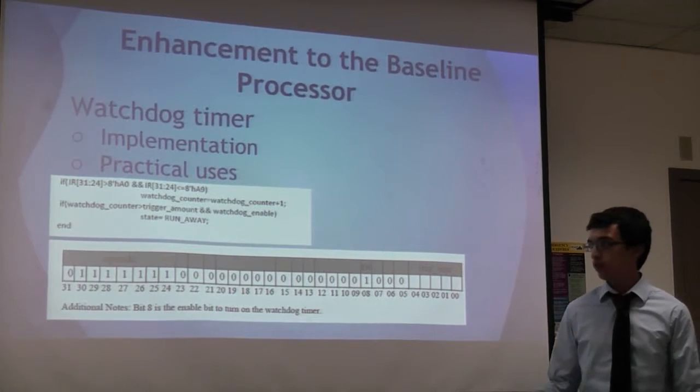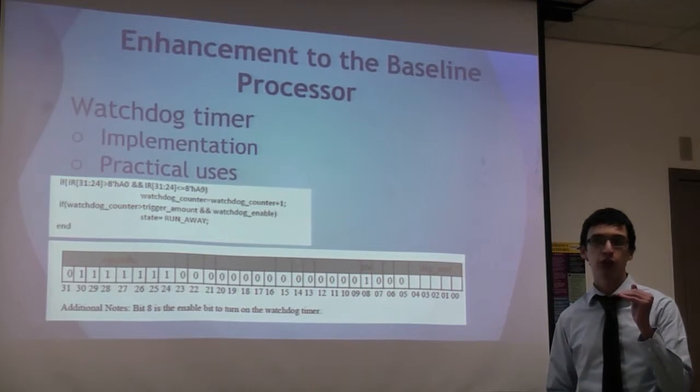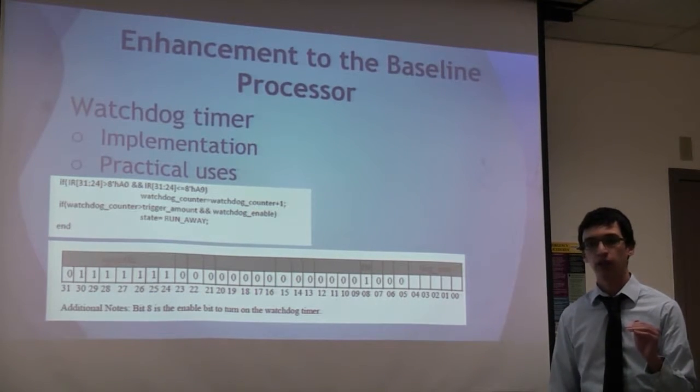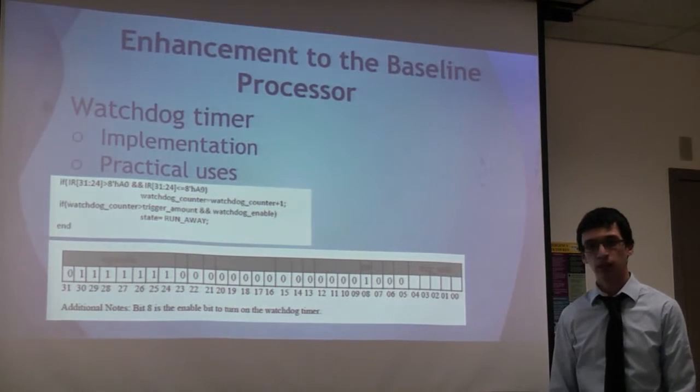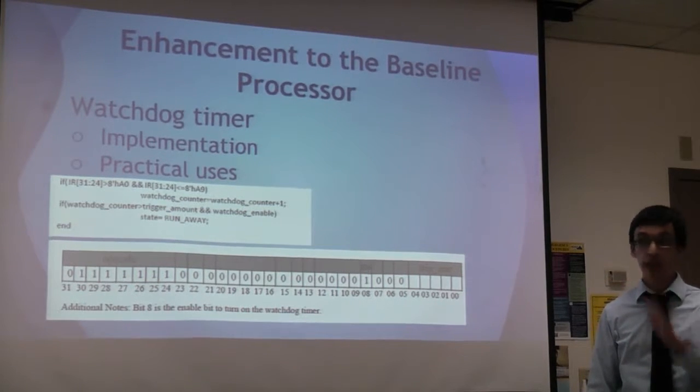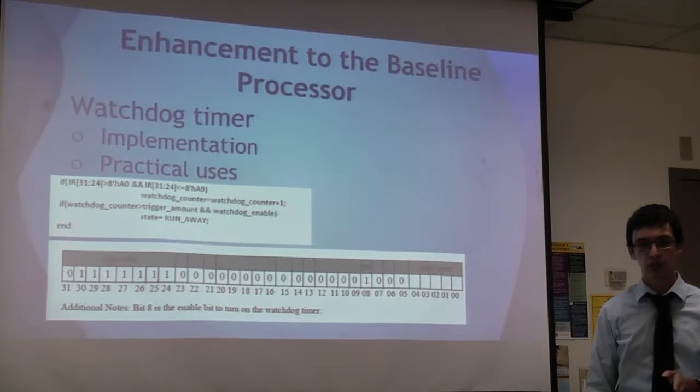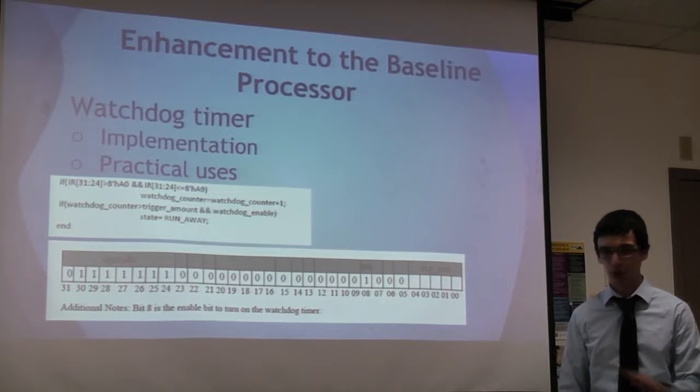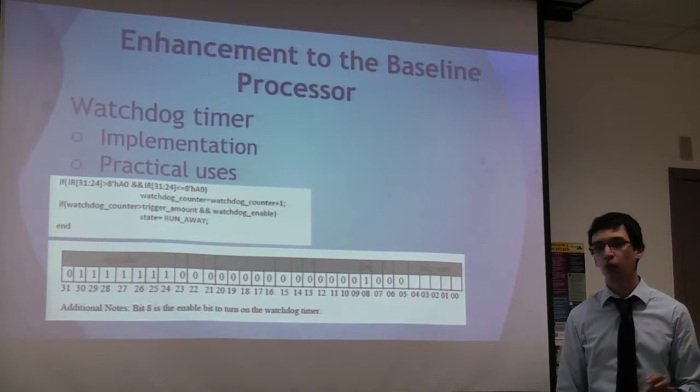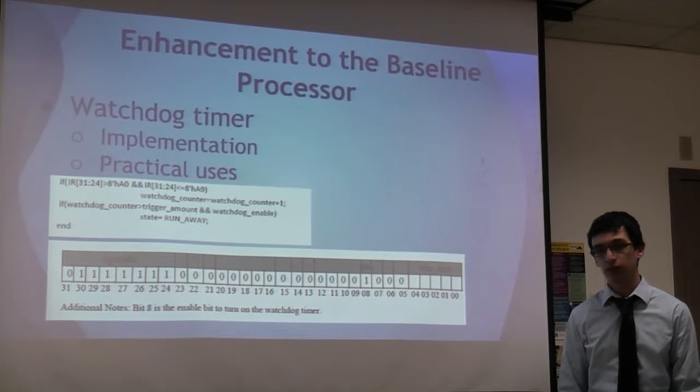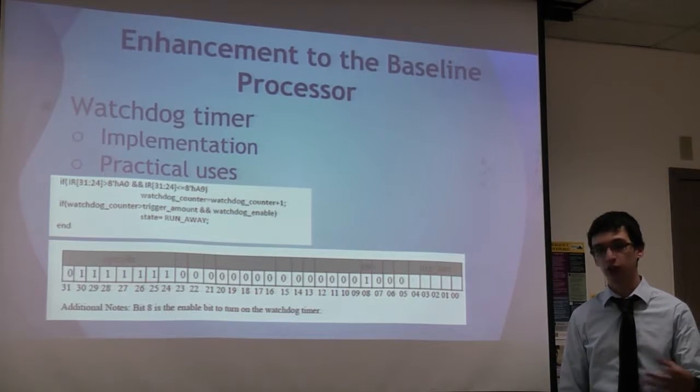So the counter gets loaded and decremented how often? At the beginning of each... Once it recognizes the jump instruction, at the beginning of each jump instruction, if the jump executes, we're incrementing it. We're not decrementing it. We're incrementing the counter. And then once the counter reaches that amount, then it'll jump to its runaway state. So when we execute our jump instruction, any conditional jump instruction. So the watchdog timer works for conditional jump instructions. We figure that if you're doing like a non-conditional jump instruction, like just a regular jump instruction, you want to be stuck in a loop. So we don't want you to get stuck in a conditional jump.